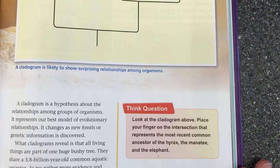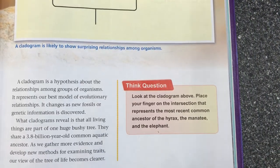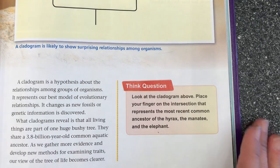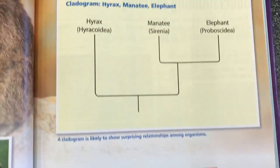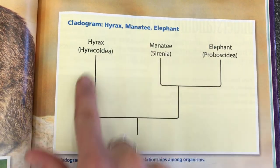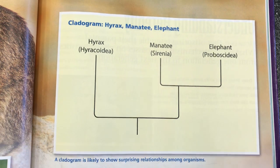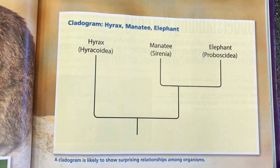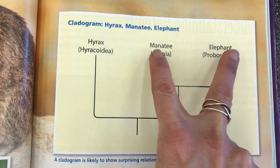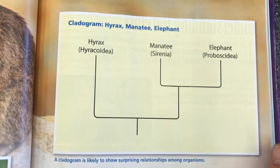Here's the think question — this one's a bit different, so I'm going to change it slightly. It says to look at the cladogram and place your finger on the intersection that represents the most recent common ancestor of the hyrax, the manatee, and the elephant. For your think question homework, I need you to draw this cladogram and then circle where you would find the common ancestors — where is the most recent common ancestor for all three, and where is the most recent common ancestor for just two of them?